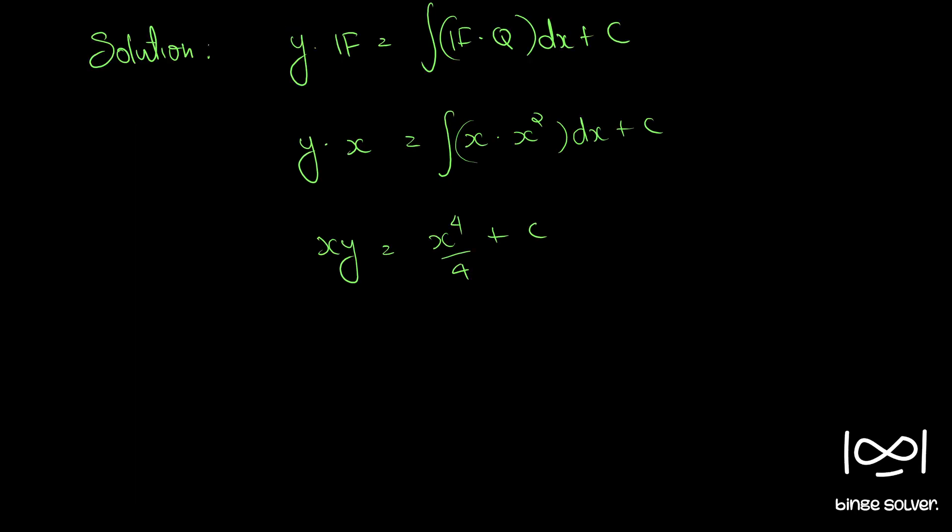So if you multiply throughout by 4, we have 4xy is equal to x raised to 4 plus 4c. Let's write it c1, an arbitrary constant.